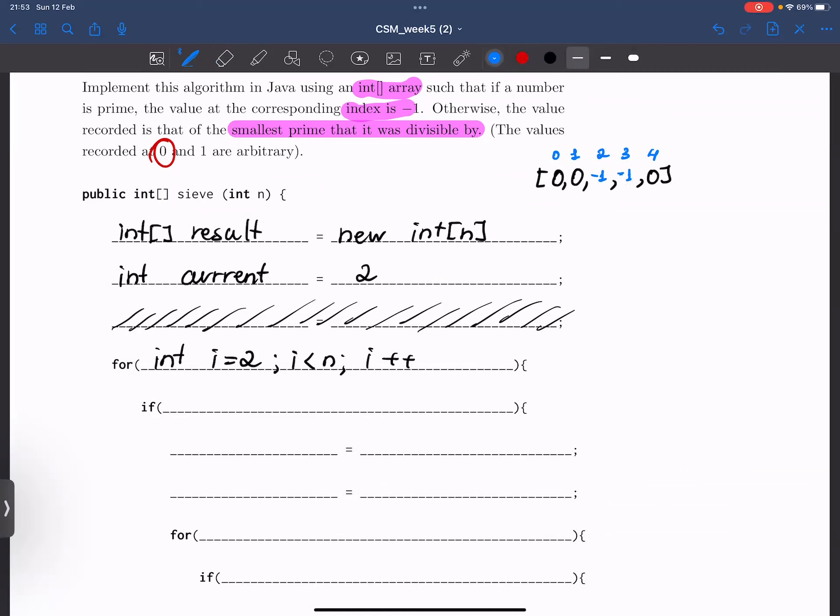But since 4 is actually, no, let's do it the other way around. So let's first focus on 2 and eliminate every number that is divisible by 2. And here we're going to change 4 to minus 1. And since we're done with our current prime number, we can jump to the next one. And the next one will be the next i, where the value at this index is equal to 0.